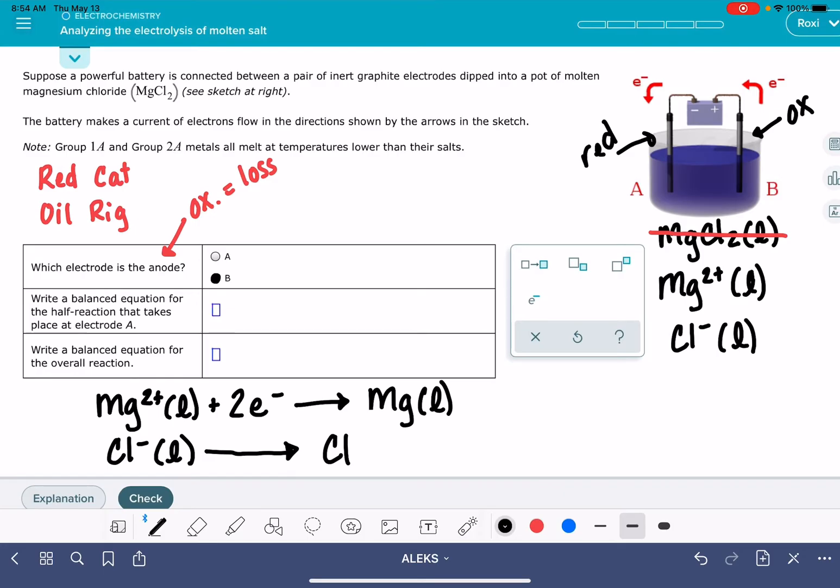In fact, all of our 7A elements like fluorine, chlorine, bromine, etc., they all like to exist in the diatomic state, F2, Cl2, Br2, etc. So chlorine, when it loses that extra electron, it's actually going to become Cl2.